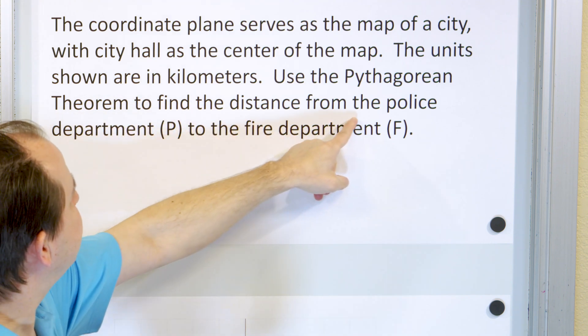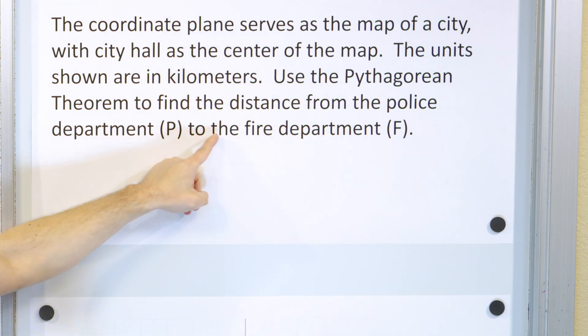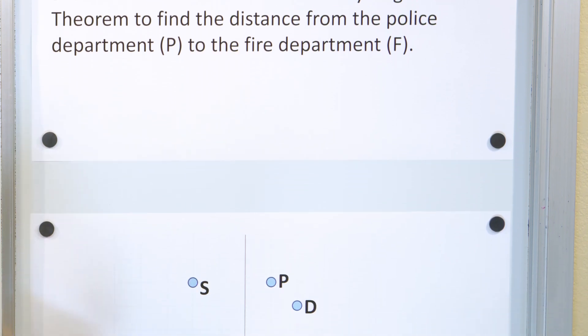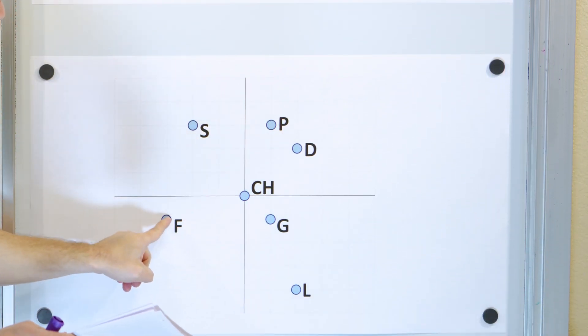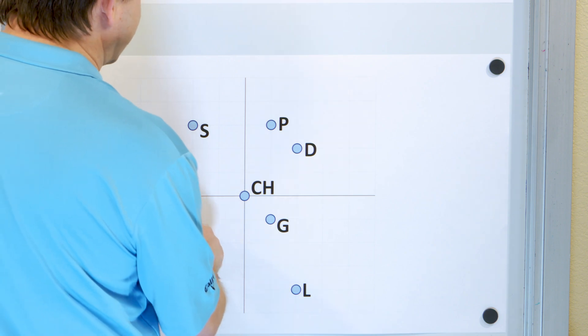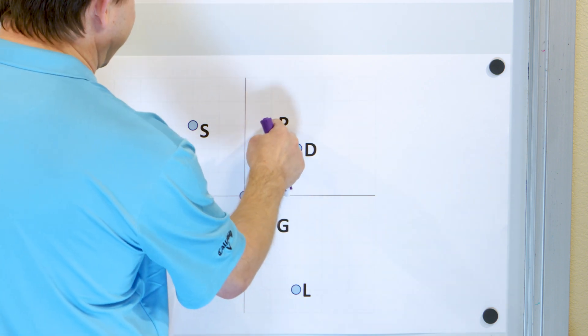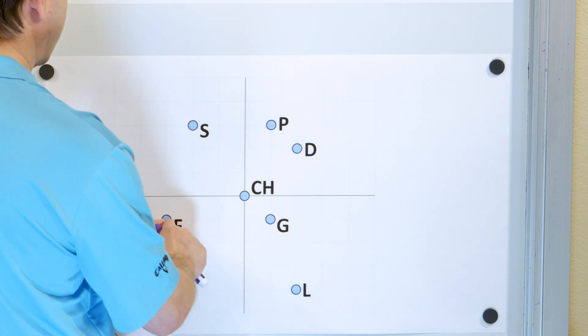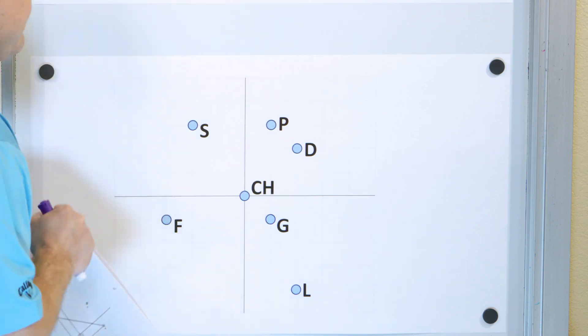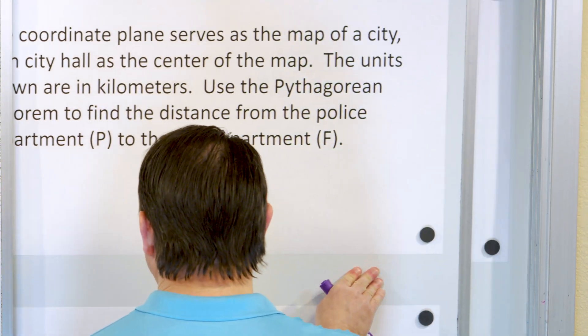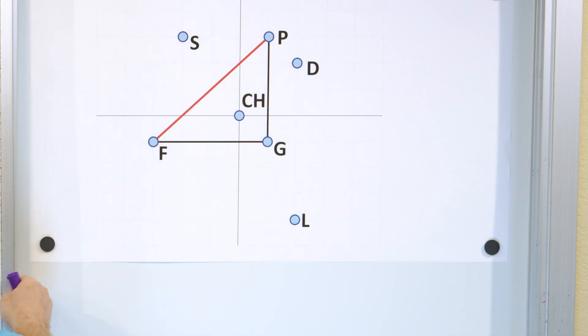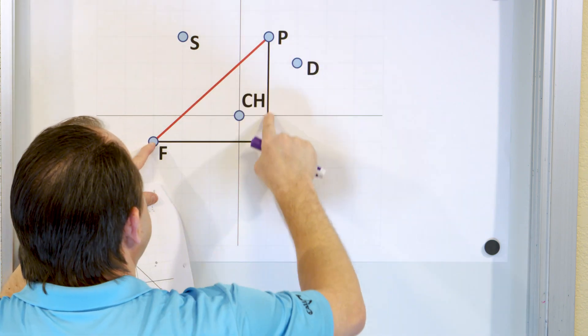We're going to find the distance between the police department, P, and the fire department, F. So P to F. So P is right here and F is right here. So we have to figure out some kind of right triangle. Now, there are multiple triangles. I could draw one like this if I wish, or I could go the other direction like this. It's going to give the same answer. So let's just draw between P and F the triangle that makes the most sense like this.